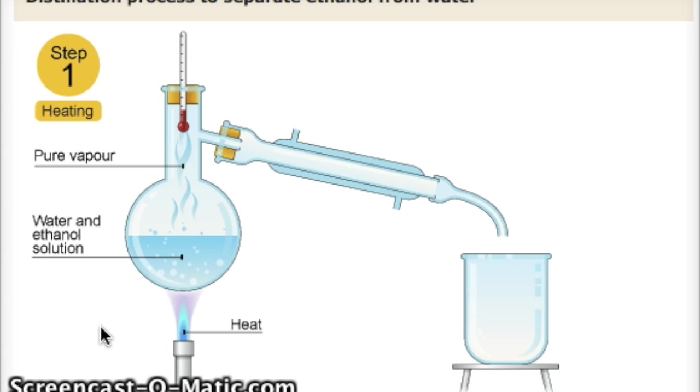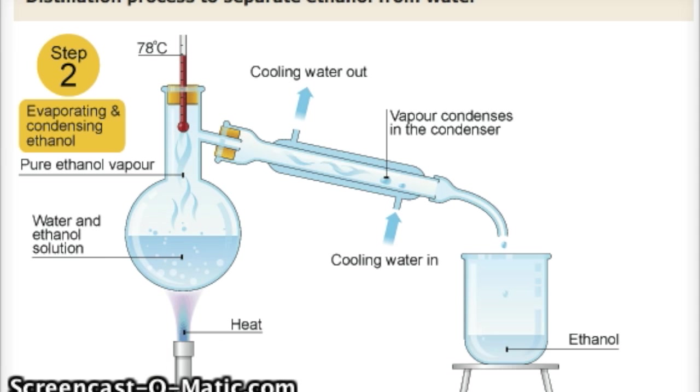Here we've got water and ethanol, and the ethanol has a lower boiling point than the water, so the ethanol will begin to boil first. We only have to get to about 70 degrees Celsius before the ethanol starts to boil, whereas water's boiling point is 100 degrees Celsius.